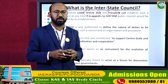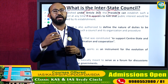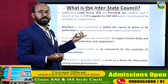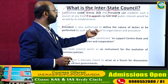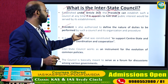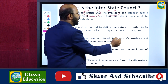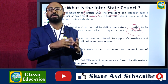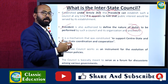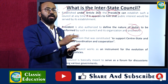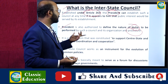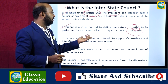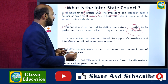It is the authority of the President — not the Prime Minister or any Chief Minister — to establish the Interstate Council. The President acts on the aid and advice of the Council of Ministers. The President is also authorized to define the nature of the duties to be performed by the council and its organizational procedure. The Interstate Council is a mechanism to support center-state and interstate coordination and cooperation.